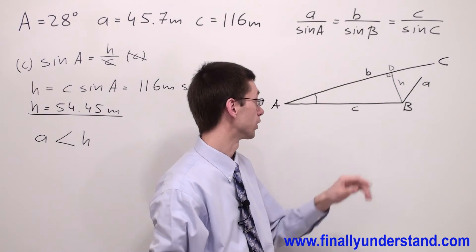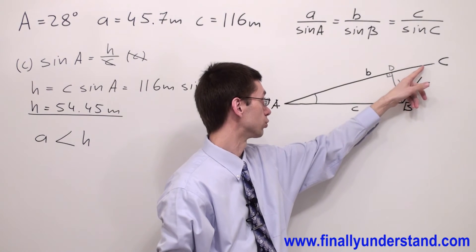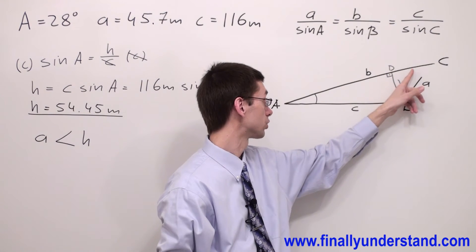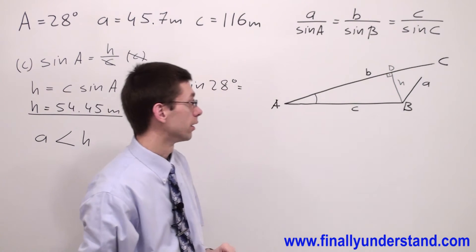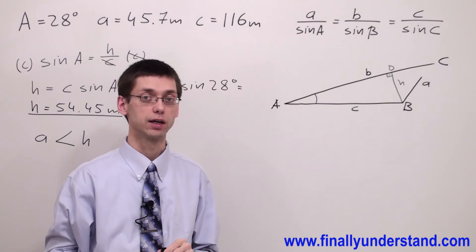You have to make sure that this side by itself is going to touch side B. In our case, it is never going to touch it. That's why we say that the triangle cannot be formed. The problem has no solution.